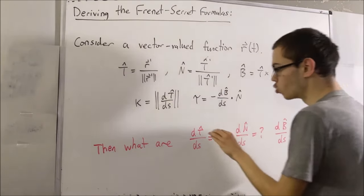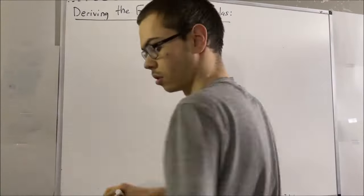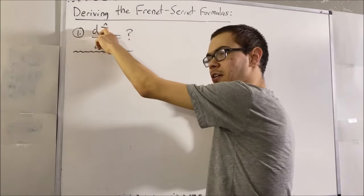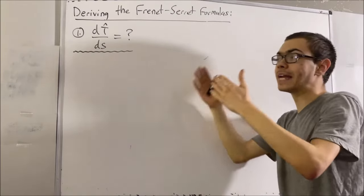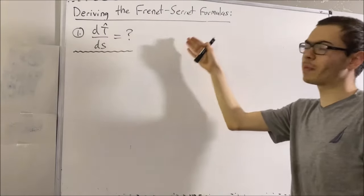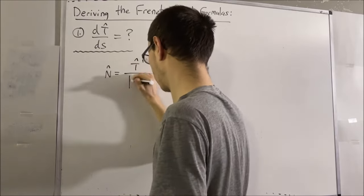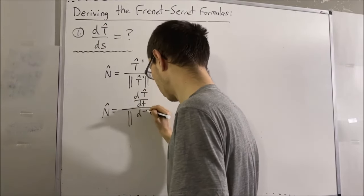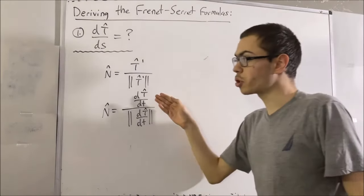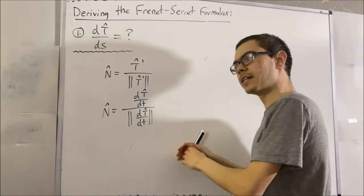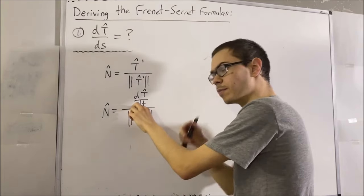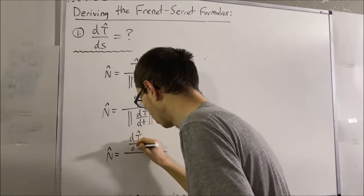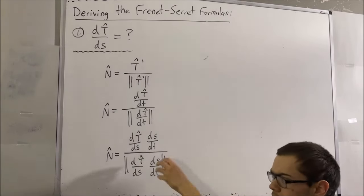We're going to start by determining the derivative of the unit tangent vector with respect to arc length. How should we figure out what this is? Notice it's a derivative of the unit tangent vector, and the unit normal vector is defined using a derivative of the unit tangent vector. So let's start by writing the definition of the unit normal vector, re-expressed in our notation. We're going to bring arc length into the picture by recognizing that dT/dt can be rewritten as dT/ds times ds/dt — this comes from the chain rule.